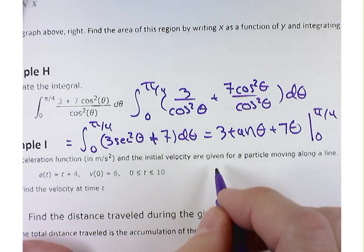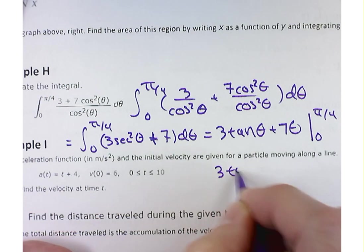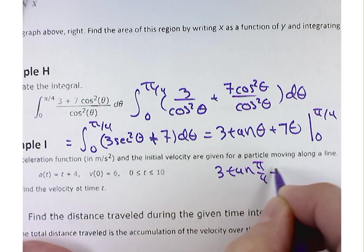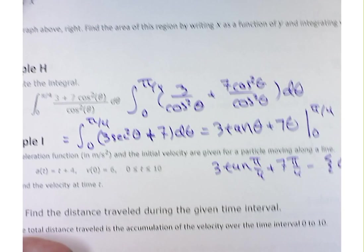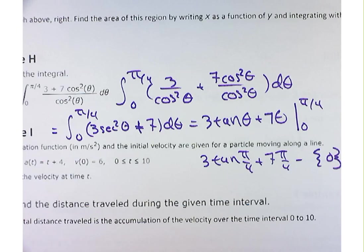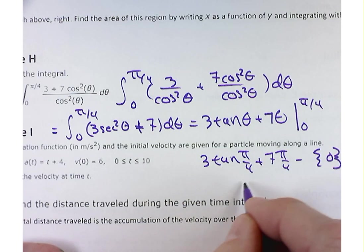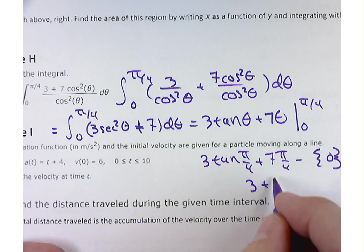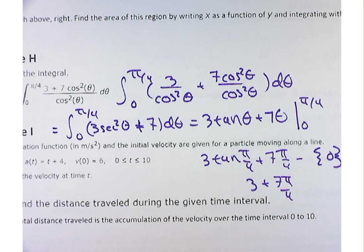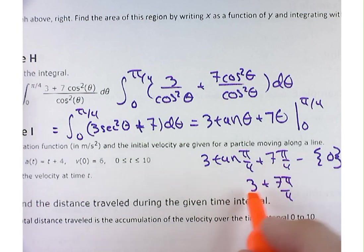This is going to be 3 times the tangent of pi over 4 plus 7 times pi over 4 minus the lower limit is 0. Plugging that into both functions is going to give you 0. So it's going to be 3 times the tangent of pi over 4 is 1, so 3 times 1 plus 7 pi over 4. That's your final answer for this problem.